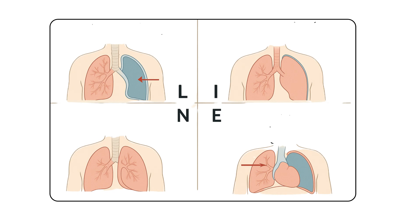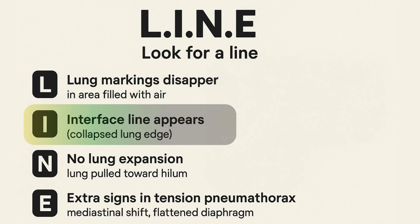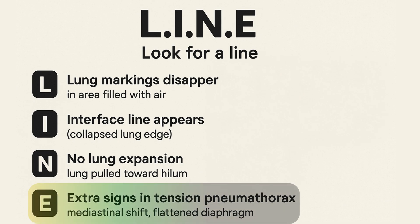Let's wrap up with a quick recap using our LINE method. L stands for lung markings disappear — in the area filled with air, those fine vascular markings are gone. I is for interface line — that sharp white line you see is the edge of the collapsed lung. N stands for no lung expansion — the lung has retracted toward the hilum, unable to expand. And E is for extra signs and tension pneumothorax — think mediastinal shift and a flattened diaphragm.